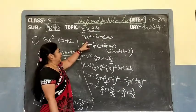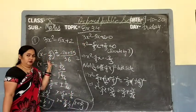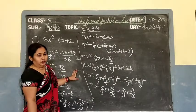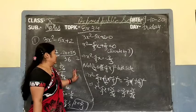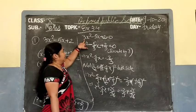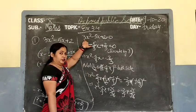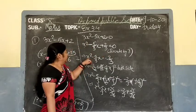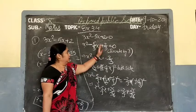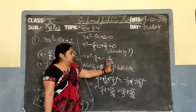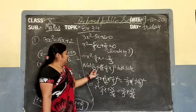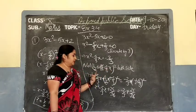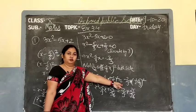Let me recap. First check if roots exist: if b square minus 4ac greater than 0, roots exist; if equal to 0, roots exist; if less than 0, roots do not exist. Then divide by the coefficient of x square (divide by 3 here) to get x square minus 5 upon 3 x equal to minus 2 upon 3. Then add half the coefficient of x, whole squared, to both sides.